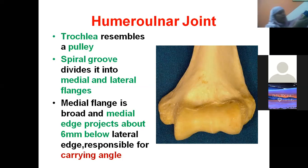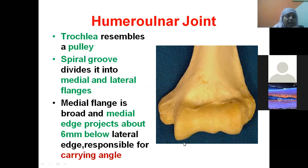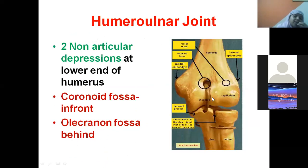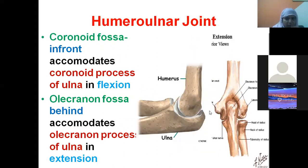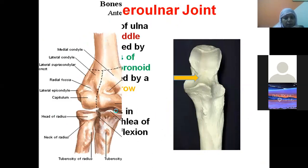The carrying angle is the angle formed at the elbow. It is formed because the medial flange is 6 mm below the lateral flange. The carrying angle itself can be a three-mark question. The coronoid fossa accommodates the coronoid process during flexion, and the olecranon fossa accommodates the olecranon process during extension.